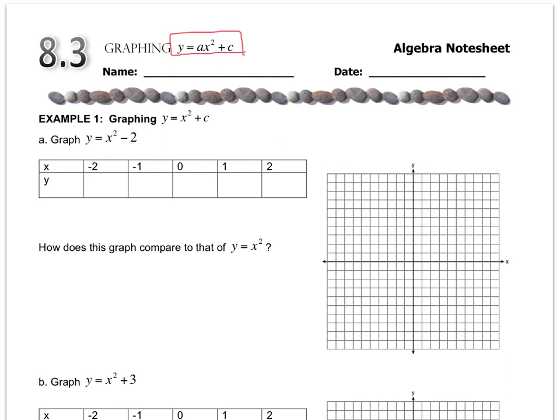Again, you also want to be careful of your order of operations, so let's talk through the first one together. So I have y = x² - 2, so I'm going to plug in the values, and I've given you these values, and they're really good values to pick because they keep the numbers nice and small.